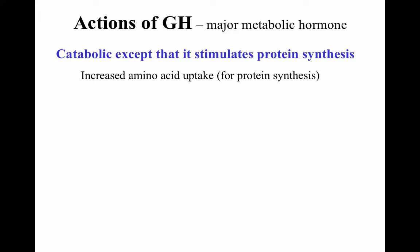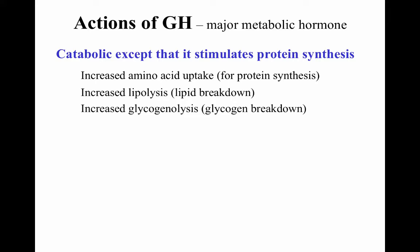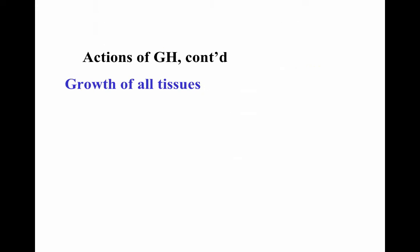Growth hormone inspires increased amino acid uptake for protein synthesis, increased lipolysis for lipid breakdown, increased glycogenolysis for glycogen breakdown to release more glucose into the bloodstream. It also spares glucose for the brain by raising blood glucose and decreasing glucose uptake by peripheral tissues. Its anti-insulin effects reduce insulin activity, leaving more glucose in the bloodstream for the brain. However, prolonged exposure to growth hormone can lead to diabetes mellitus type 2.